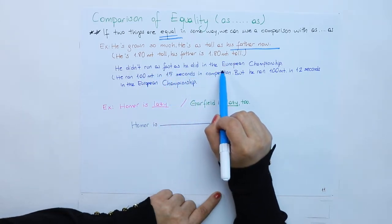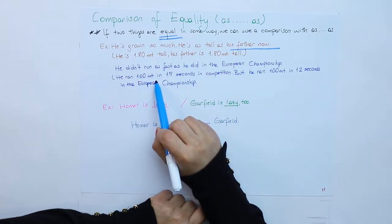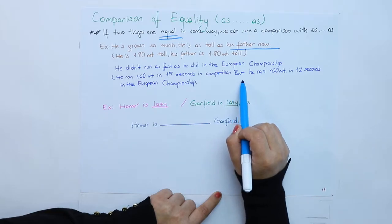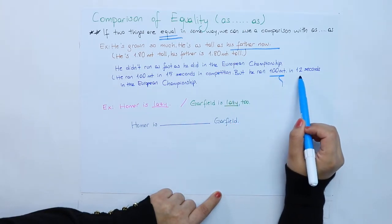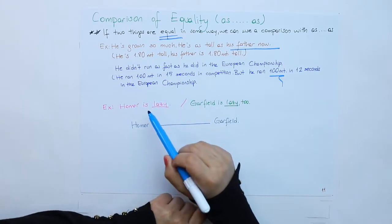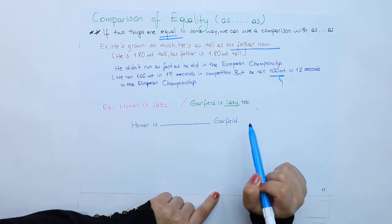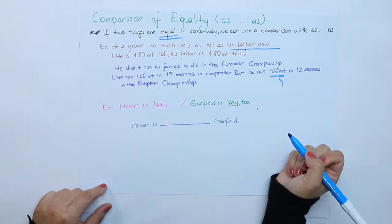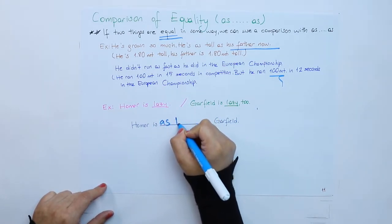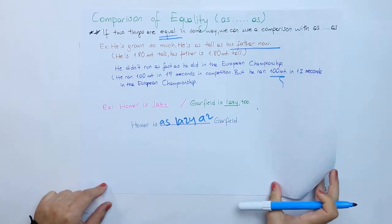He didn't run as fast as he did in the European Championship. He ran 100 meters in 50 seconds in competition, but he ran 100 meters in 12 seconds in the European Championship. Homer is lazy, Garfield is lazy too. So we can say that Homer is as lazy as Garfield.